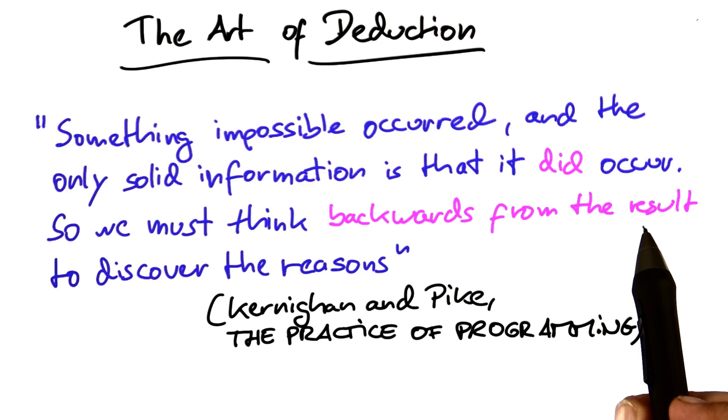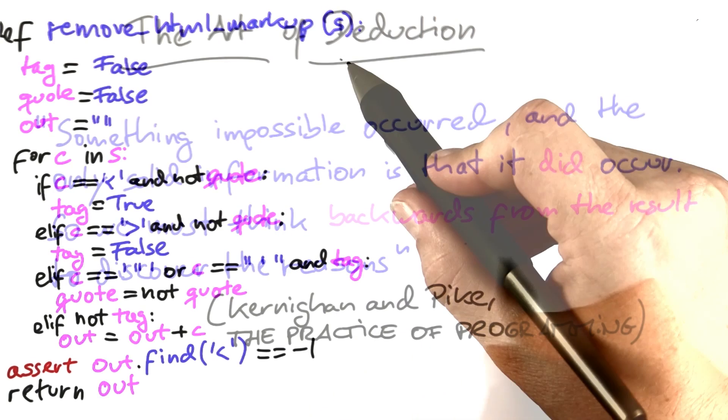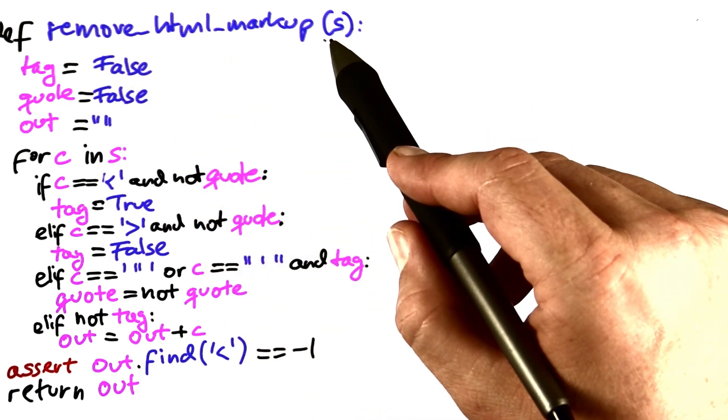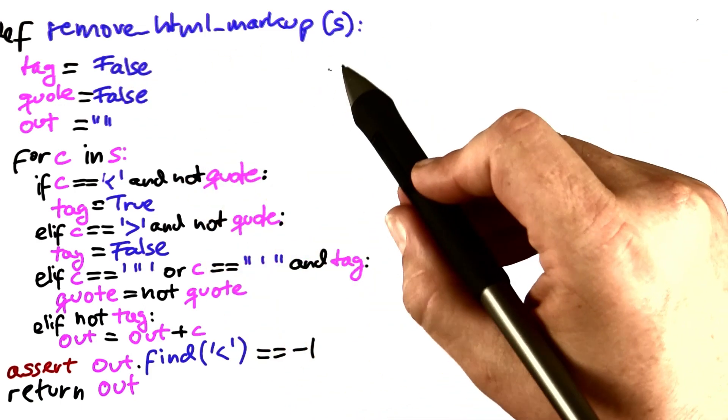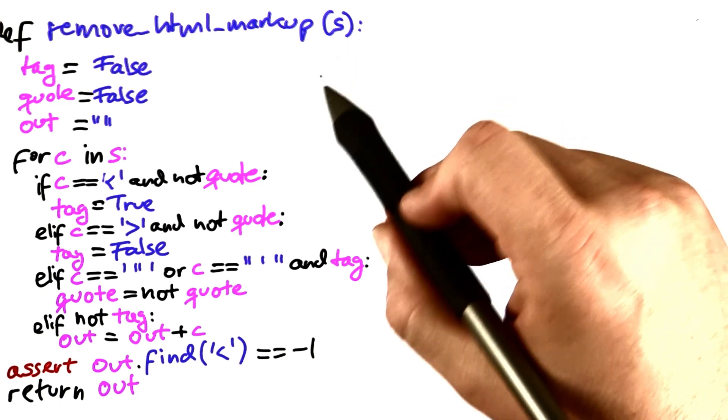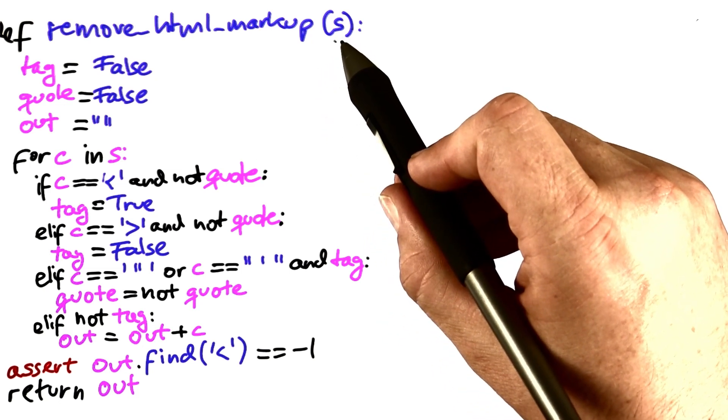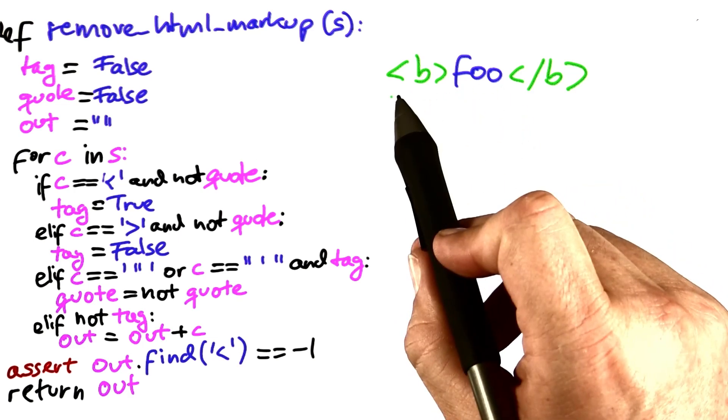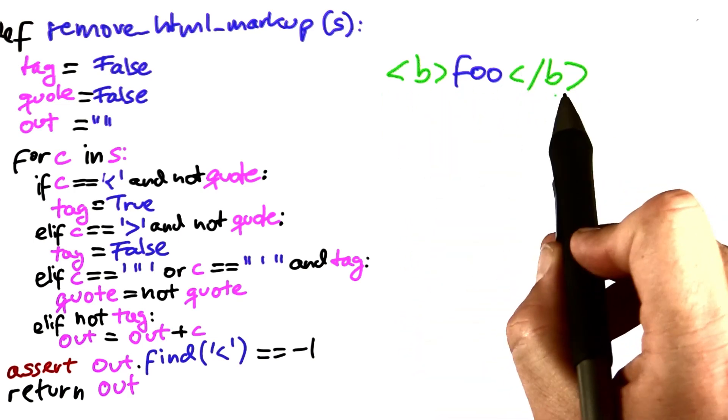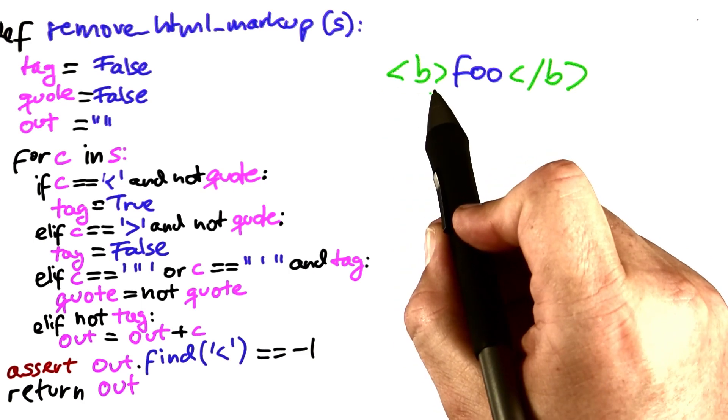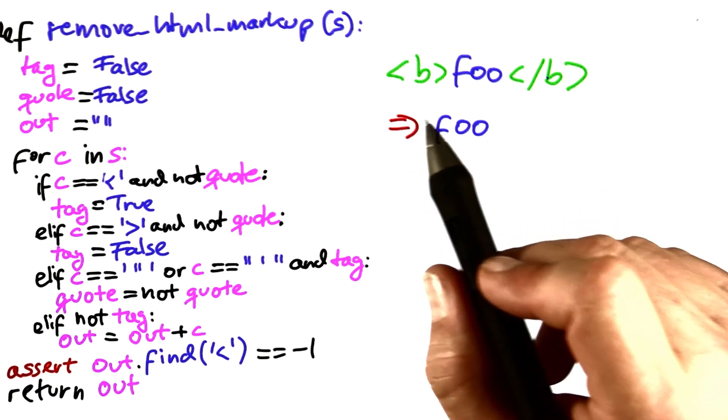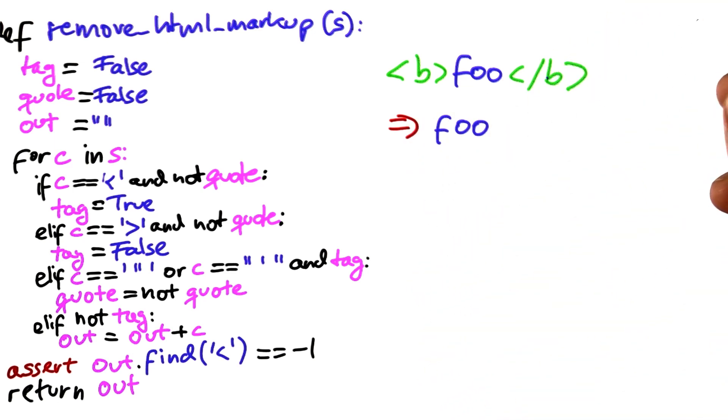Let me illustrate how this works using a familiar example. Here again, we have a function to remove HTML markup. Just as a reminder, what this function is supposed to do is take HTML input, such as this one—a foo text enclosed in two HTML tags, one to switch on bold rendering and one to switch off bold rendering—and turn this into text in which the HTML markup has been removed.